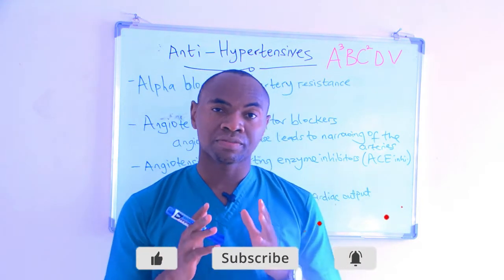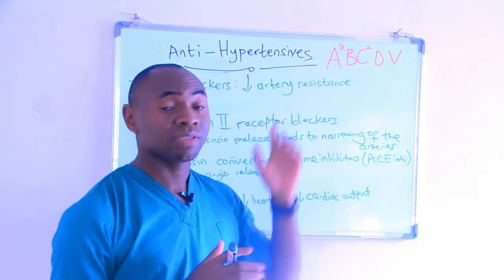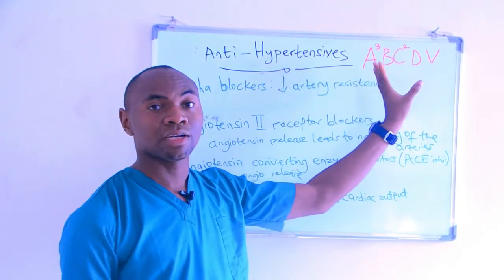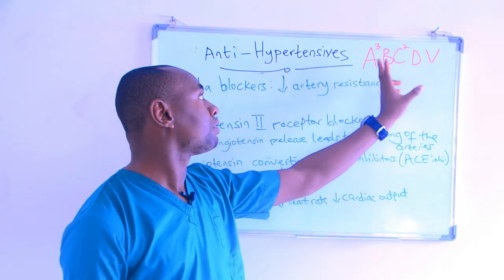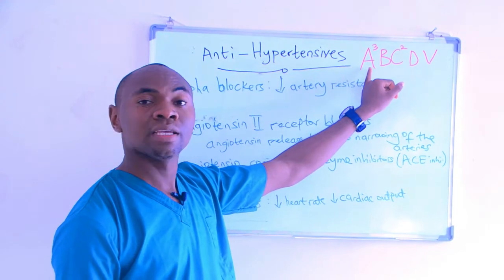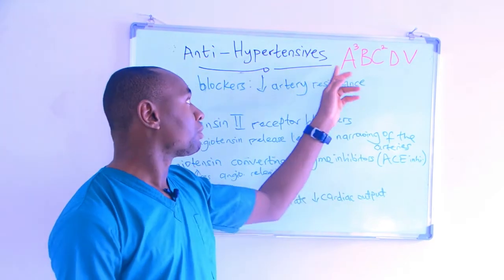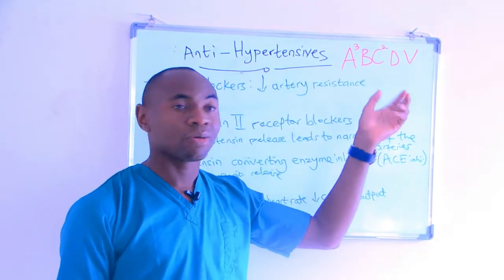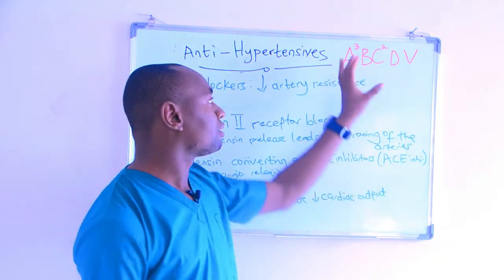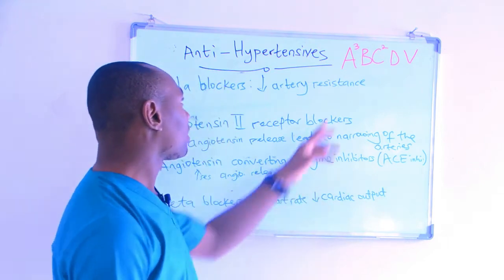Based on all these causes, most classes of antihypertensives were created. Today we are going to look at eight different and distinct classifications of antihypertensives. The acronym to remember them all is A3BC2DV — following our normal alphabetical order: A, B, C, D, then V.